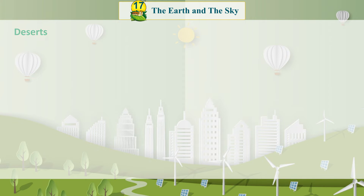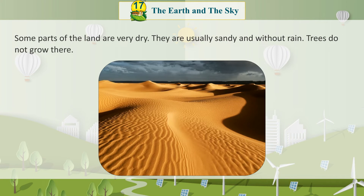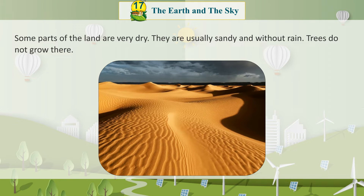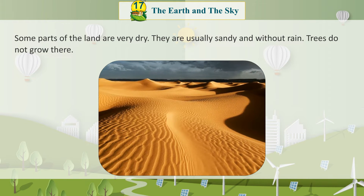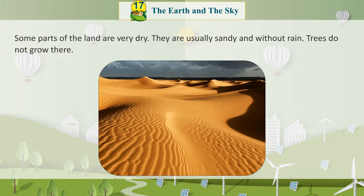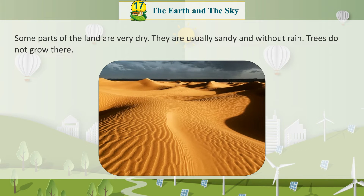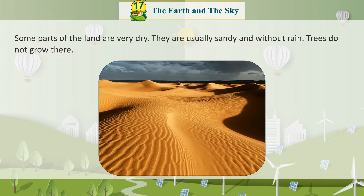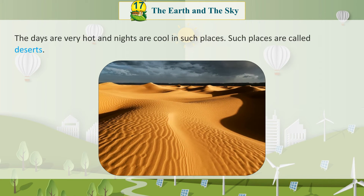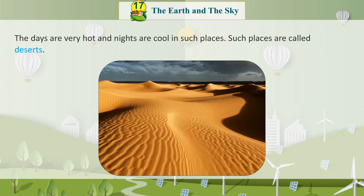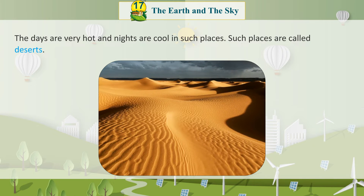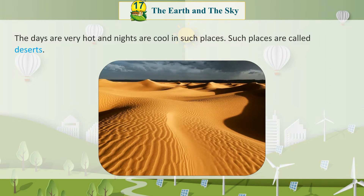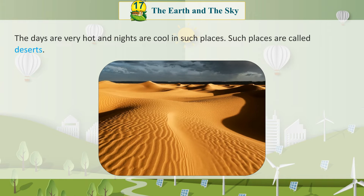Desert: Some parts of the land are very dry. They are usually sandy and without rain. Trees do not grow there. The days are very hot and the nights are cool in such places. Such places are called deserts.